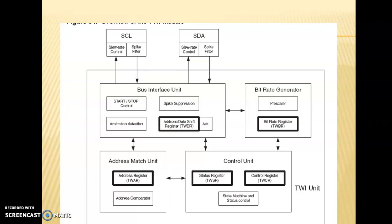The bitrate generation unit generates the clock when in master mode, and this clock determines the speed of the transmission. In all cases of serial communication, the master generates the clock. The bus interface unit generates the start and stop bits along with the address and data, and also receives the acknowledgement from the slave.